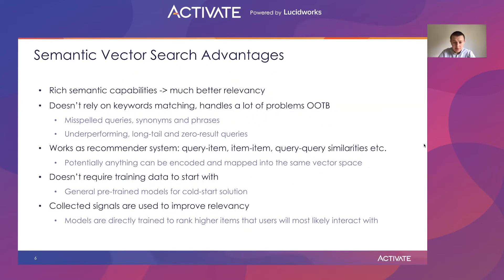Semantic vector search has a lot of advantages. First of all, it has rich semantic capabilities, which lead to much better relevancy. By design, it doesn't rely on keyword matching as classical search engines do. Thus, it handles a lot of problems out of the box, such as misspelled queries, synonyms, phrases, underperforming long-tail, and zero-result queries.